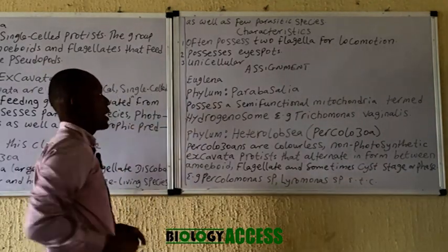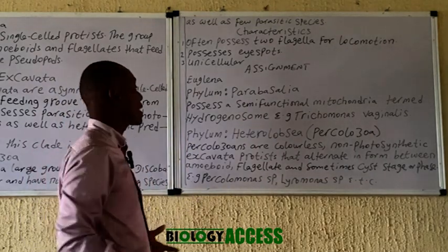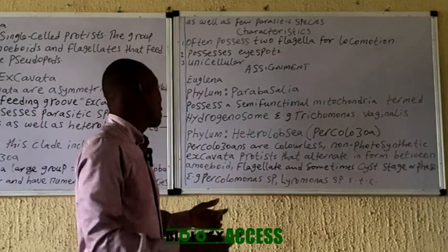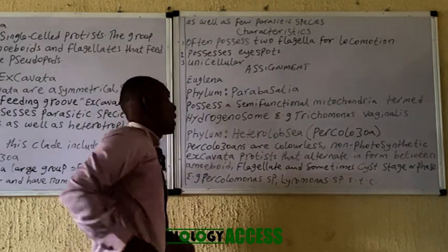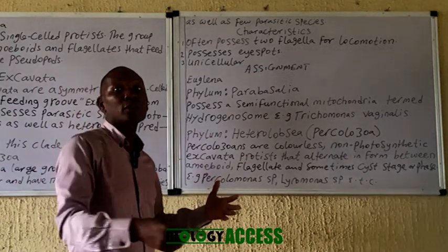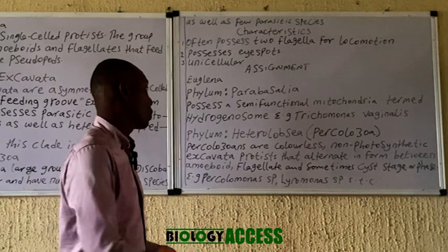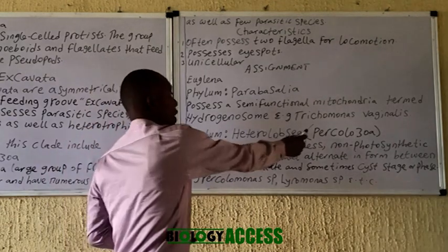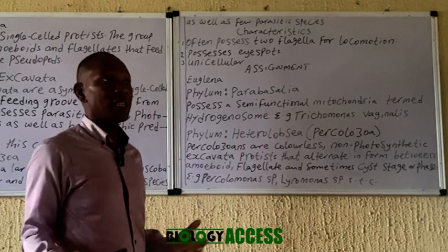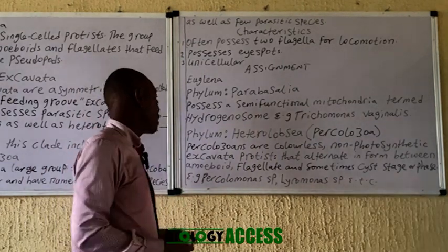The next phylum is the phylum Parabasalia, which actually possesses a semi-functional mitochondria called the hydrogenosome. Most of these species are commensal, while there are also parasitic species, notably Trichomonas vaginalis, which we know as a parasite that causes disease in human beings.